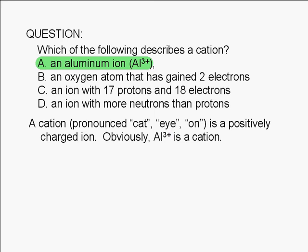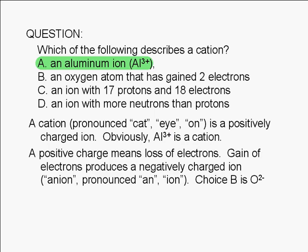Let's see what's wrong with the other choices. A positive charge is obtained when an atom loses electrons. A gain of electrons, as in choice B, produces a negatively charged ion, or an anion.